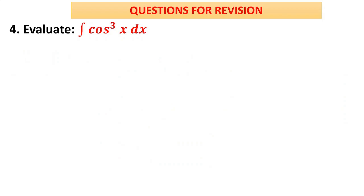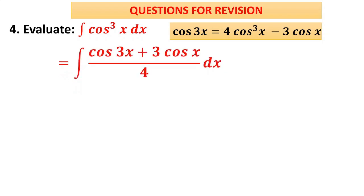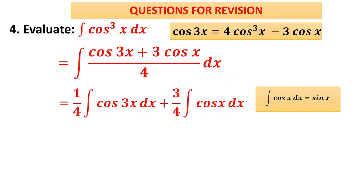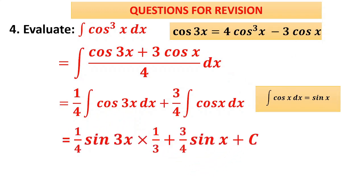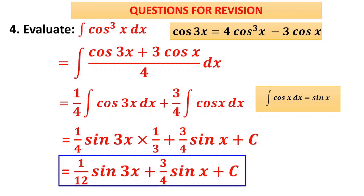Question 4: ∫cos³x dx. Use the formula cos 3x = 4cos³x − 3cos x, giving cos³x = (cos 3x + 3cos x)/4. Split into (1/4)∫cos 3x dx + (3/4)∫cos x dx. Since ∫cos x = sin x, the first integral becomes sin 3x/3 and the second is simply sin x. So the final answer combines these terms.